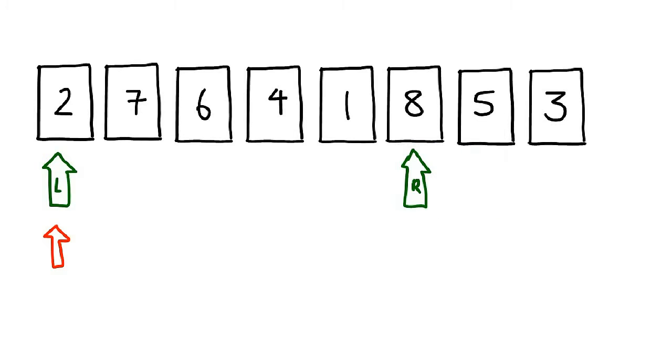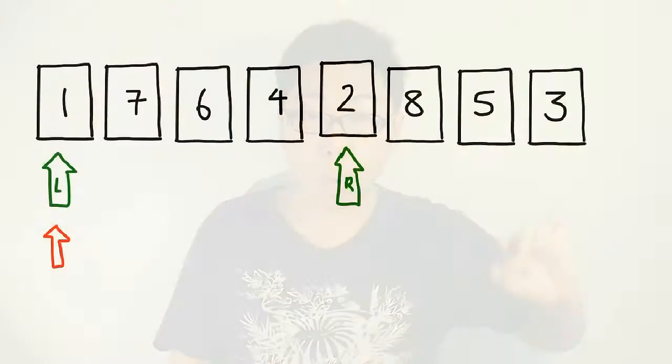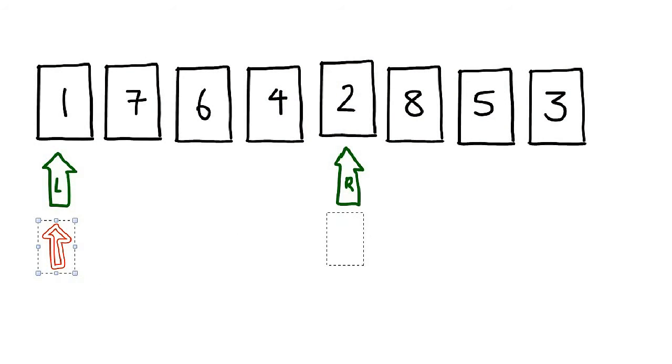Two and eight — once again, no swap is necessary. We move on again, and now the right pointer is pointing at one. In this case, one and two needs to be swapped. Now, when we swap these two numbers, we must also pay attention to the pivot. For each pass of Quicksort, the pivot is always the same number, which means when a swap is made, the pivot must move as well. Since we started with the pivot on two, now that two has moved its position, the pivot must also go to the new position where two is.